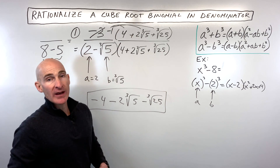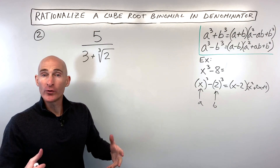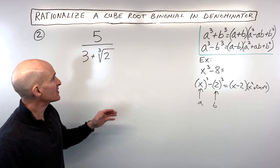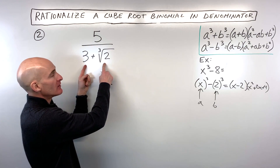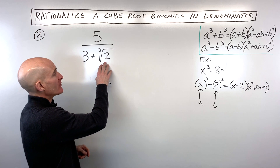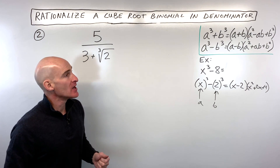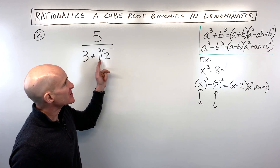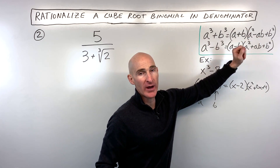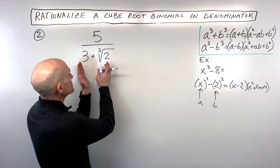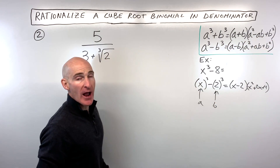Let's take a look at another example — see if you can practice example two on your own, and we'll go through it together. In this problem, we have a sum in the denominator with a cube root that we're trying to rationalize. Because we have a sum, we're going to use the sum of two cubes formula, and we'll multiply by the corresponding trinomial.